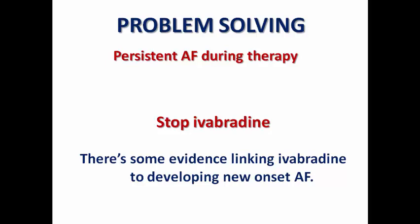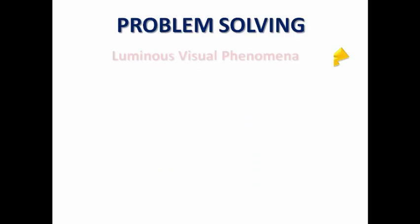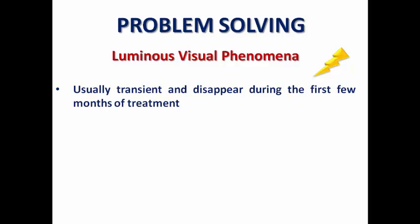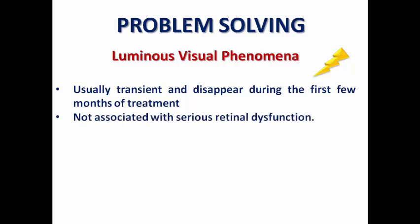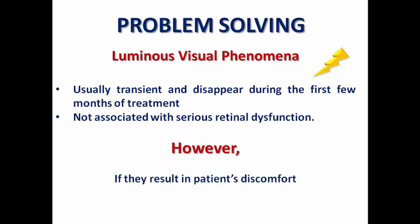One of the famous side effects of ivabradine is luminous visual phenomena — flashes of light that patients experience after starting ivabradine, resulting from its pharmacological effect on the retina. They are usually transient and disappear after the first few months of treatment. Reassure patients that they are not associated with any retinal dysfunction or vision impairment. However, if they are irritating and causing discomfort, you may need to stop ivabradine after discussing the benefits and risks with the patient.